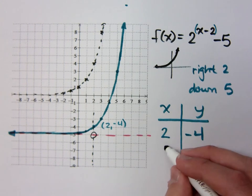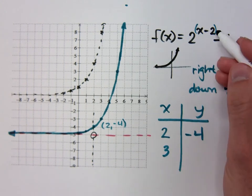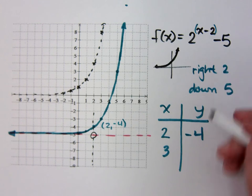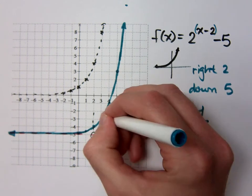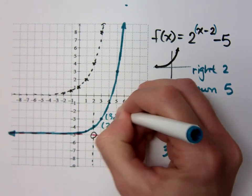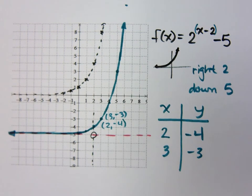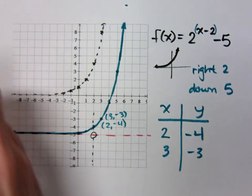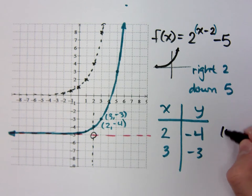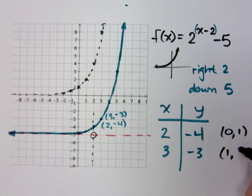If I plugged in 3, 2 to the 3 minus 2, so that's 2 to the 1st, is 2. Minus 5 is negative 3. And there is 3, negative 3 in terms of the ordered pair. But what I'm really doing here is I'm seeing this as being my 0, 1, and my 1, 2.